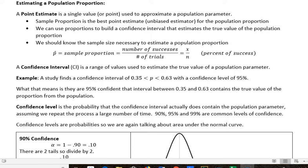We should know the sample size in order to do this. P-hat is our sample proportion, and that's equal to the number of successes over the number of trials, x over n, or the percent of success.